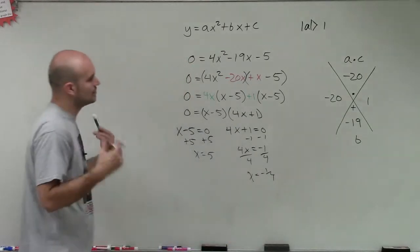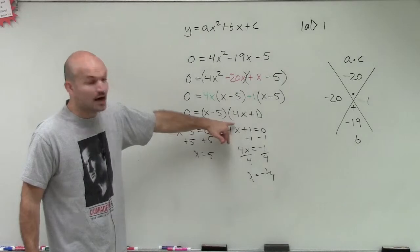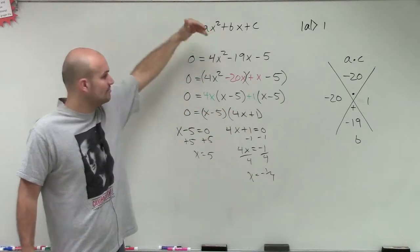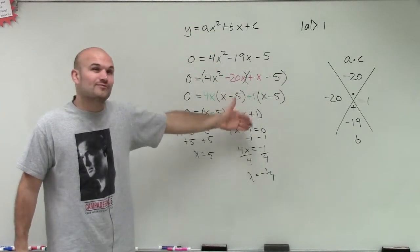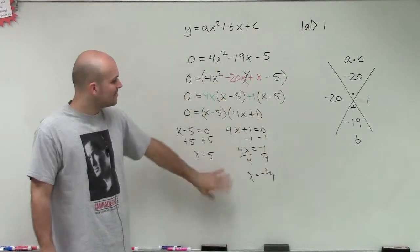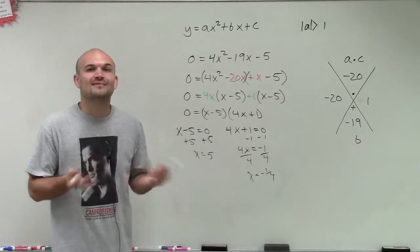You can always check your factored form by multiplying it out using the distributive property or FOIL to make sure you get your original equation. All we've done is rewritten it into factored form. We didn't change the value of the equation at all. Therefore, it gave us our solutions or x-intercepts of our quadratic equation.